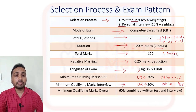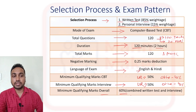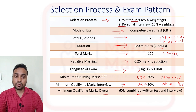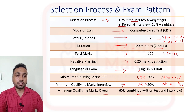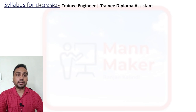For the minimum qualifying overall marks for the final merit, you have to get 60%, combining both the written test and interview scores. This is the selection process and exam pattern for the BDL exam.